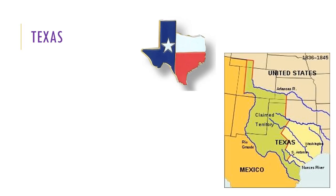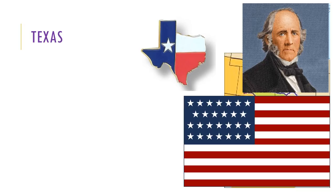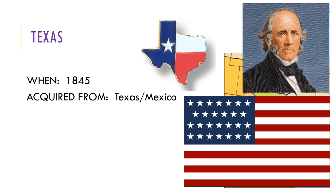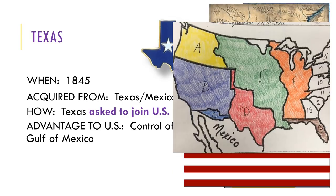Despite the fact that Texans had declared independence, they were still vulnerable to attacks from Mexico. Some people wanted to join the United States, while others wanted to remain their own country. Sam Houston convinced the Texan leaders that joining the United States would offer Texas protection from Mexico, as well as new trade partners. So on December 29, 1845, Texas was admitted as the 28th state of the United States of America. The U.S. granted their wish, seeing this as an opportunity to gain control of the Gulf of Mexico. Find the Texas territory on the map — did you say D?